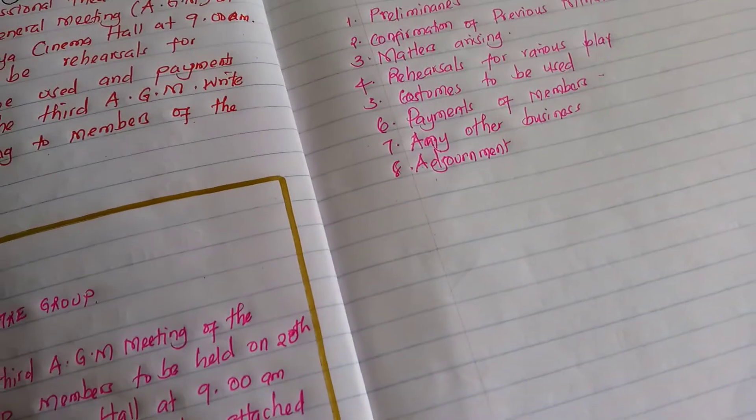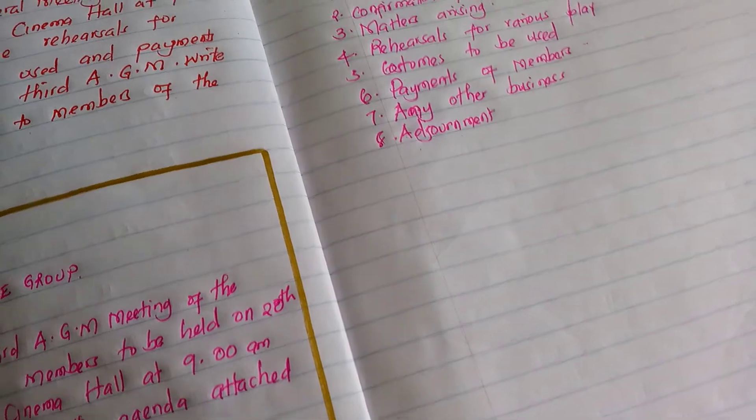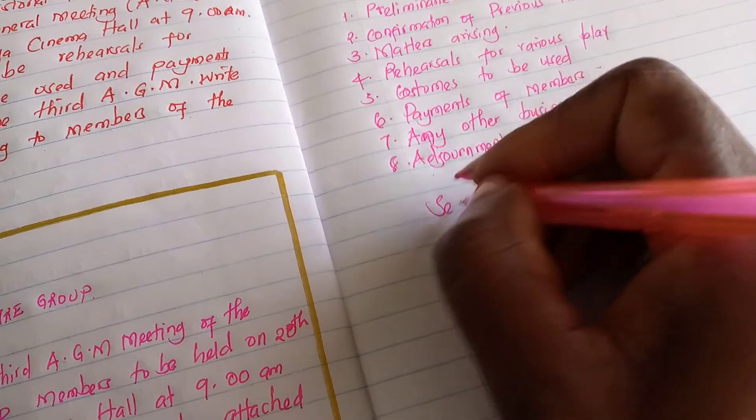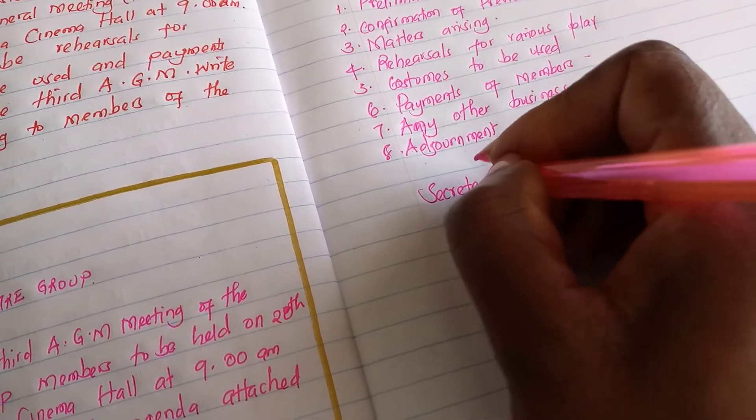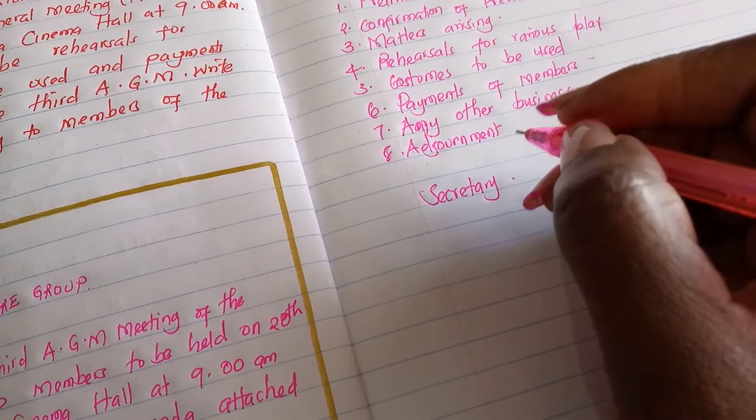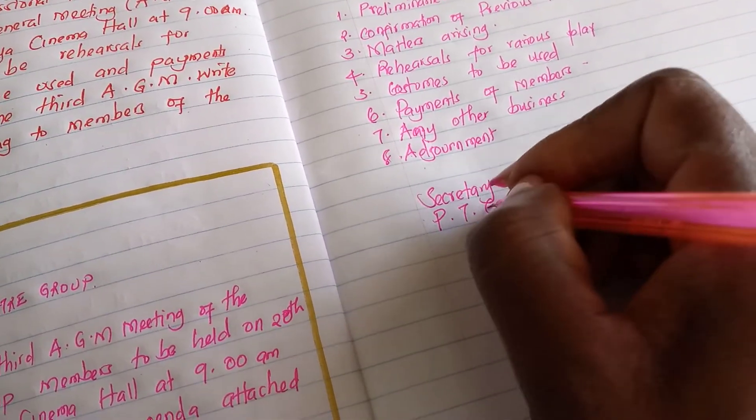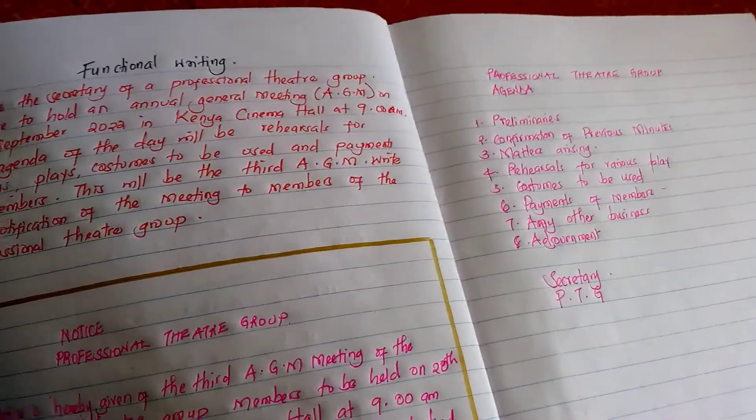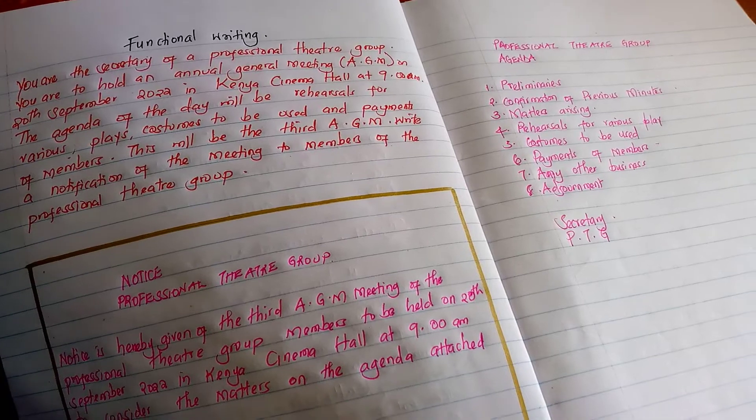After the adjournment, then you sign off. It is the secretary, professional theatre group. You can also write in full. That is the question, the functional writing, and I hope this one will help you.